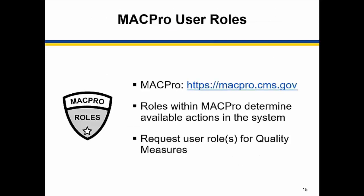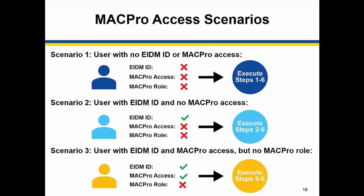After requesting your MACPro access role, you should receive an email notification that your role has been approved. The next step is to request your user role within MACPro, also known as your MACPro specific role. This slide presents several scenarios, as attendees may be starting at different stages of the access process. Users who have used MACPro before should refer to Scenario 3 and ensure they have the correct access to quality measures authorities by viewing their user profile in MACPro.